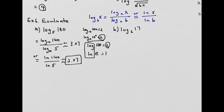If you cannot use the other nine properties, you can always use the change of base formula. For the second problem, change to natural logarithms: the larger base goes in the numerator and the small base in the denominator. Inputting into the calculator gives approximately 1.58. Before using your calculator on an exam, make sure you have the right settings by trying a known problem to verify you get the correct answer.